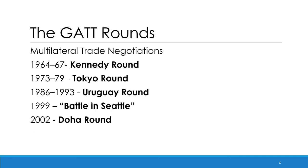Now let's talk about the multilateral trade rounds that took place under the GATT. Discussions that led to certain commitments were called negotiating rounds. During any round, the agreement about certain commitments is reached by consensus, meaning that a round is finalized only when each member agrees with the required commitment. These rounds led to substantial tariff reductions in developed countries and some initial agreement on non-tariff barriers. The most important round was the Uruguay Round, which focused on important aspects such as non-tariff barriers, intellectual property rights, and trading services and agriculture. A critical achievement of the Uruguay Round was the creation of the WTO, or the World Trade Organization, which transformed the GATT from an informal agreement into a formal international institution.